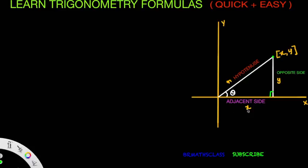Now observe this diagram. I considered a right angle triangle. In this right angle triangle, observe theta. The side opposite to theta is called the opposite side — no confusion there. The side which is opposite to 90 degrees is called the hypotenuse. Once opposite side and hypotenuse are identified, the remaining side is known as the adjacent side.